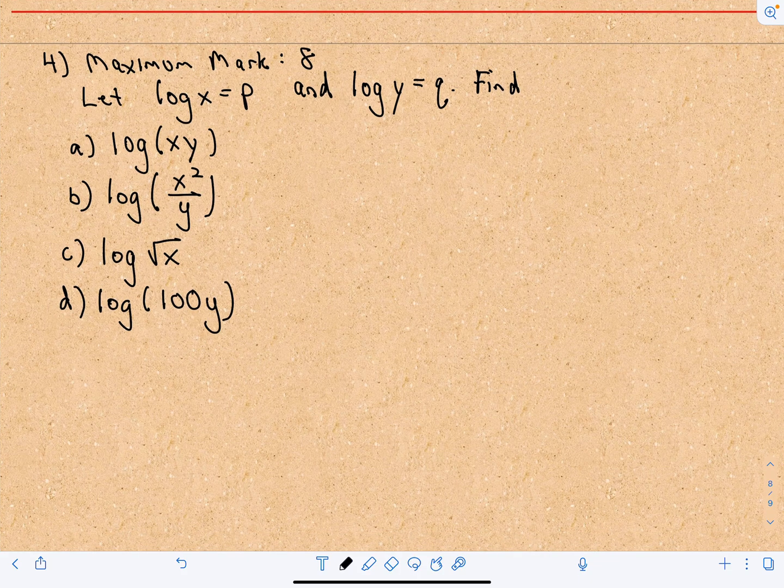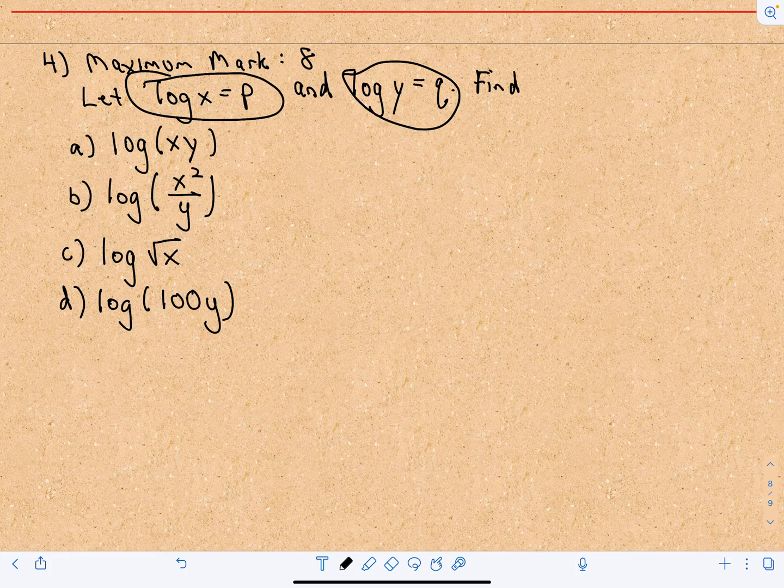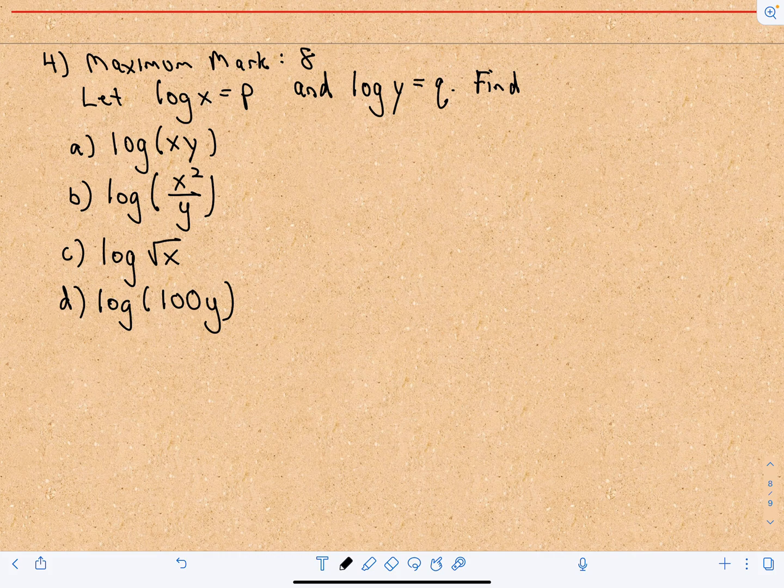So this will be the solution for question number four from the sample IB exam paper one. Here we've got that log of X is equal to P and log of Y is equal to Q, and then we're going to use properties of logarithms to simplify these four expressions through A, B, C, and D.